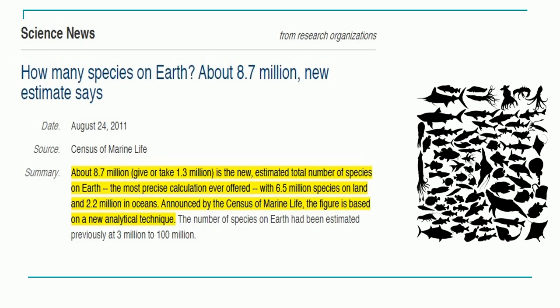We have also seen why there is a need for taxonomy and different systems of classification, because there is enormous diversity of living organisms on this earth. It is estimated that around 3 million to 100 million species would be living on this earth. However, a recent research paper published in 2011 states that there are around 8.7 million species living on earth, of which 6.5 million species live on land and 2.2 million species live in the oceans.